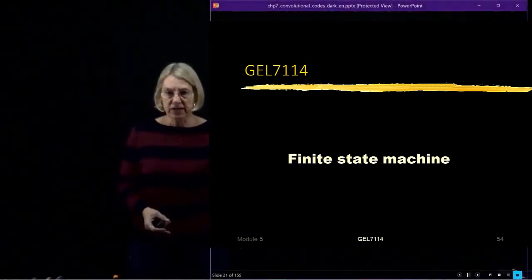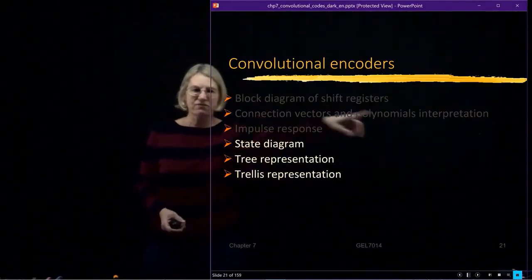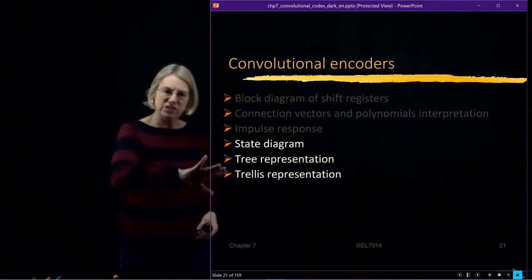So we've finished the first three representations: the impulse response, connection vectors, and the polynomial representation. And now we go into the last three.